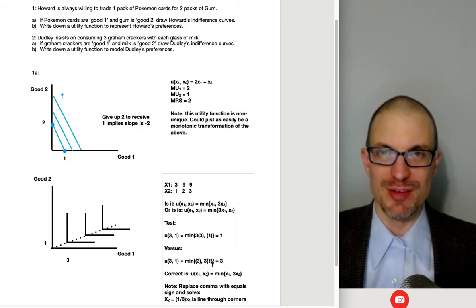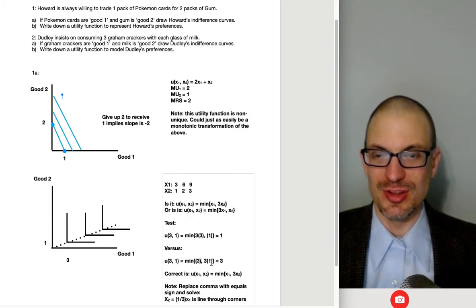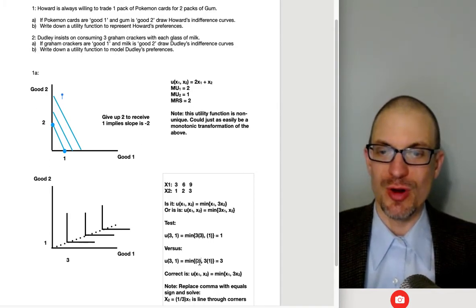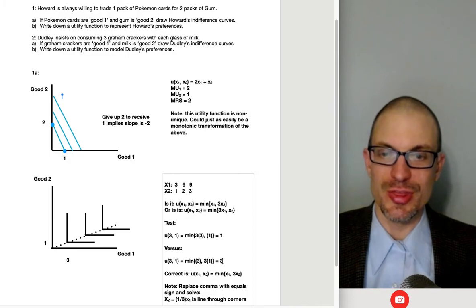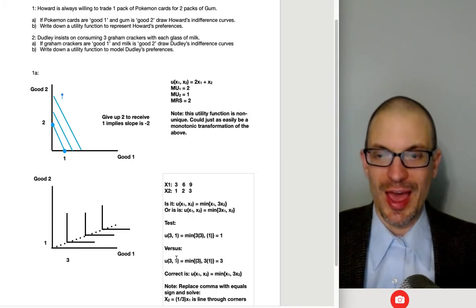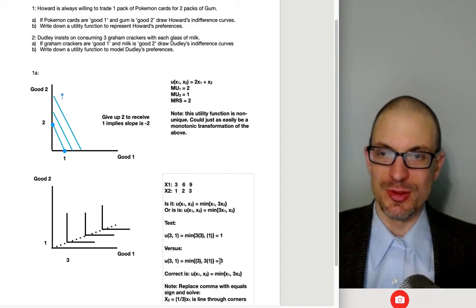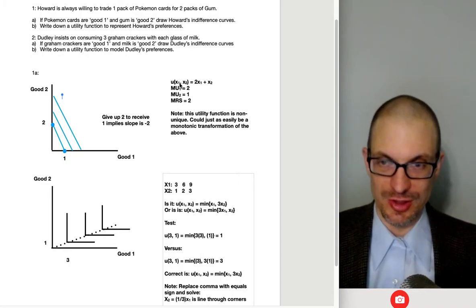And what happens if we give Dudley another glass of milk and no more, no addition graham crackers? Well, now the utility is still three, right? Because if we get another glass of milk, this is going to be three times two, that's six. Oh, but utility didn't rise because it's going to be the utility is coming from whichever is the smaller of these two. You've got an extra glass of milk, but you only had three graham crackers. So your utility is still at three. And this captures exactly the idea of perfect complements preferences. To be able to reach a higher level of higher indifference curve, you've got to have more of both in the same fixed proportion as is desired.